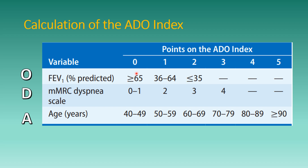The ADO index is scored on 5 points — 0, 1, 2, 3, 4, 5. FEV1 more than 65% is normal (0). MMRC 0 to 1 is normal (0). Age 40 to 49 is scored 0. FEV1 36 to 64% is scored 1, and less than 35% is scored 2. Age increases in ranges of 10 years.